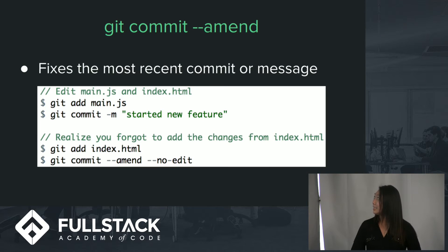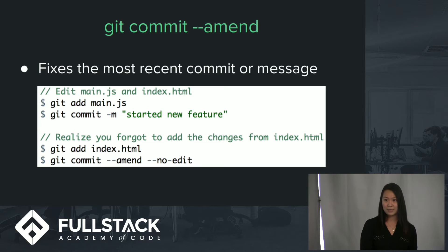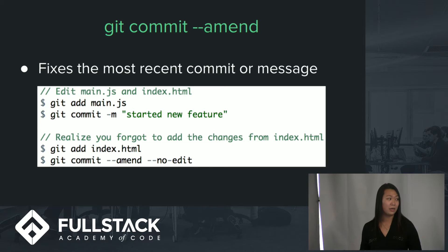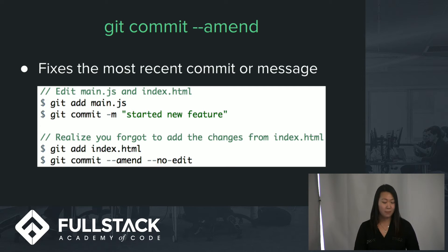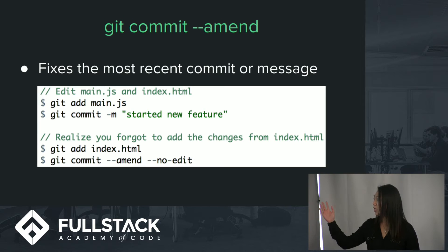`git commit --amend` allows you to combine your staged changes with your previous commit, so you don't have to create a brand new one. Say you've edited two files, main.js and index.html, added one, committed it, but forgot to add the other — you can just quickly amend that. It keeps your project history cleaner so you don't have dozens of little commits. The `--no-edit` flag lets you make the amendment without changing the commit message, and it'll just add that file to your previous commit.